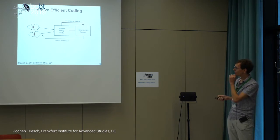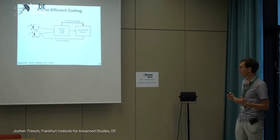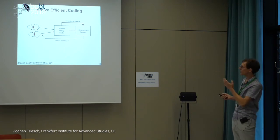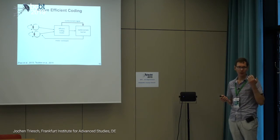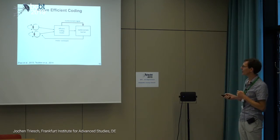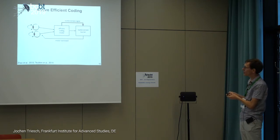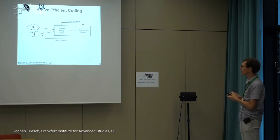This is maybe the most important slide — a cartoon simplified version of how all these models work. The generic active efficient coding model has an agent with sensory input illustrated by two eyes. It learns with a sparse coding model or some other form of efficient coding how to represent these sensory signals effectively, but it also needs to generate behavior.